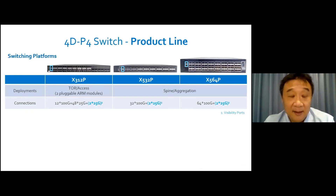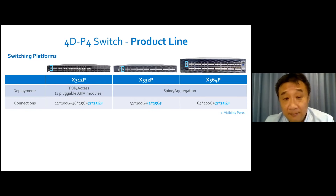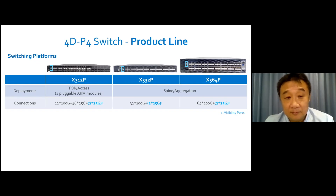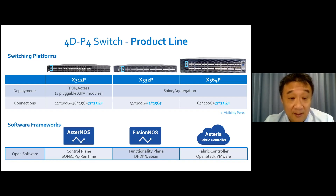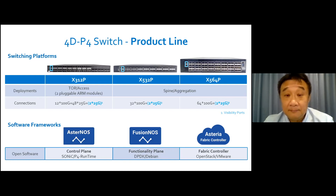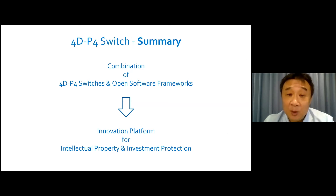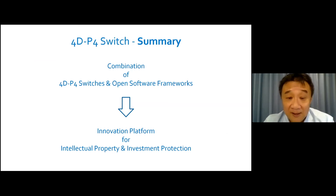The whole switch product line contains switching platforms from core access switch all the way to the spine and aggregation switch. Please note that all switches have 25-gig dedicated visibility ports on their front panel. Also associated with this product line are the software frameworks in the area of network OS and public controller. With this software framework, network developers can take advantage of the open software architecture to add their own unique network services that best fit their business application. We believe this strong combination of unique hardware design in the 4D P4 switches and their associated open software framework will provide our customers an innovation platform for intellectual property and investment protection.